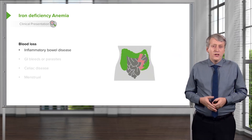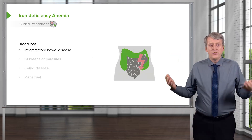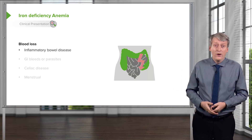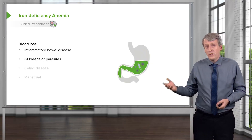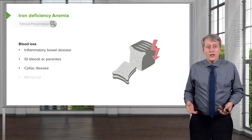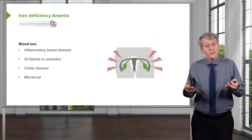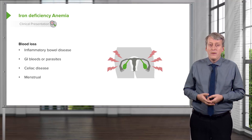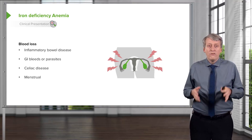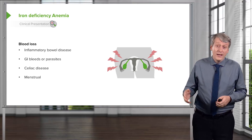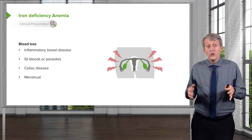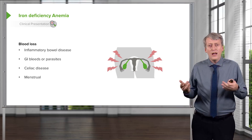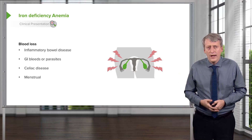Occasionally, iron deficiency can also be seen in blood loss, because when you lose blood you're essentially losing iron if you don't replete the iron in your diet. Patients with inflammatory bowel disease, GI bleeds, parasites, celiac disease, or patients with excessive menses are all at risk for iron deficiency. Even adolescent girls with normal menstrual cycles can develop iron deficiency if they're not having enough iron in their diet.